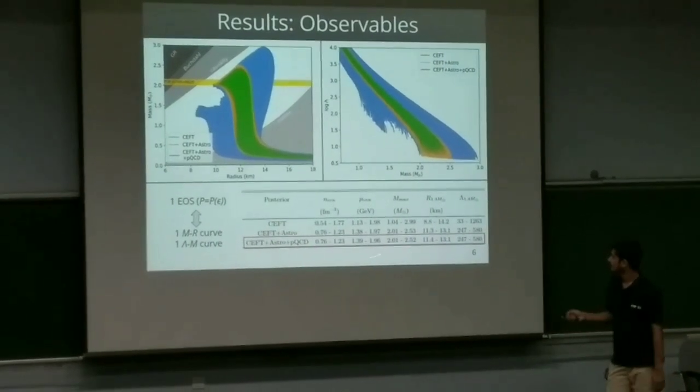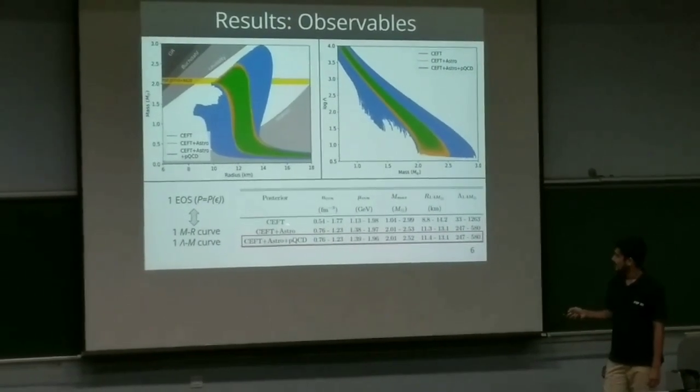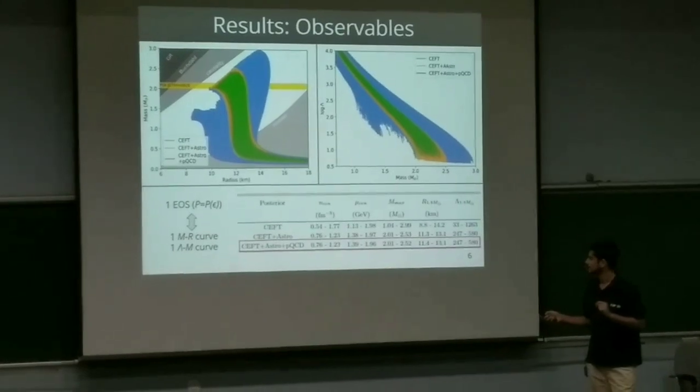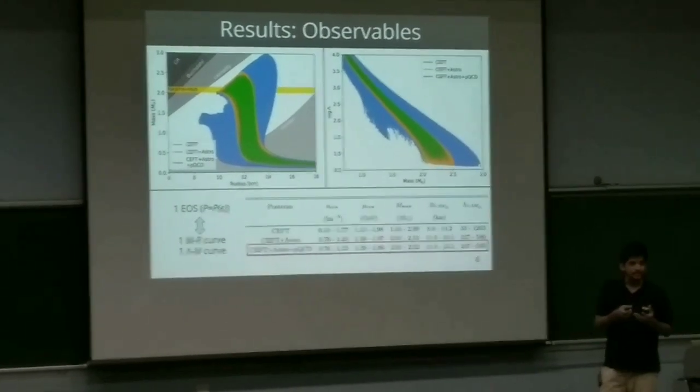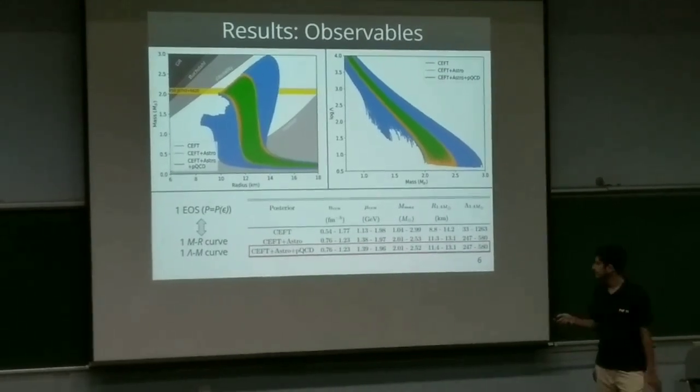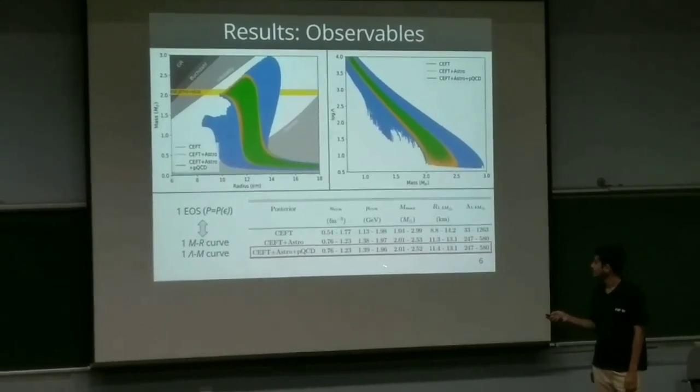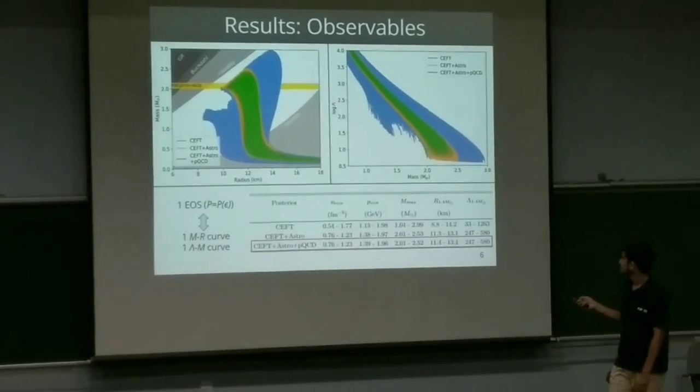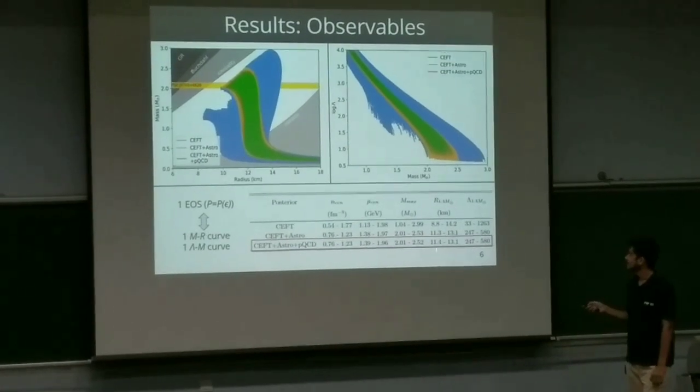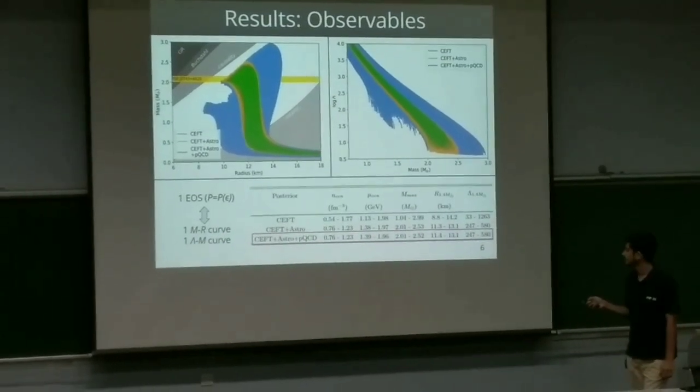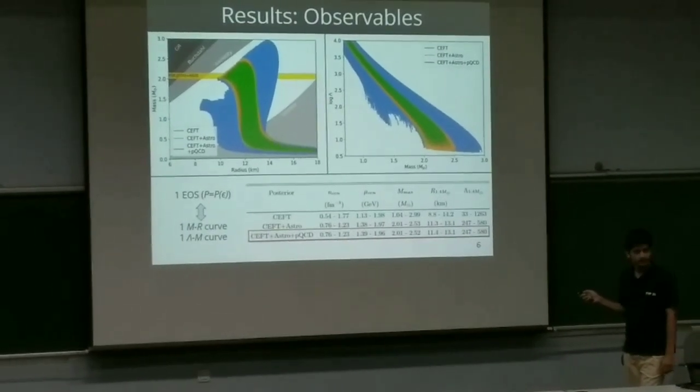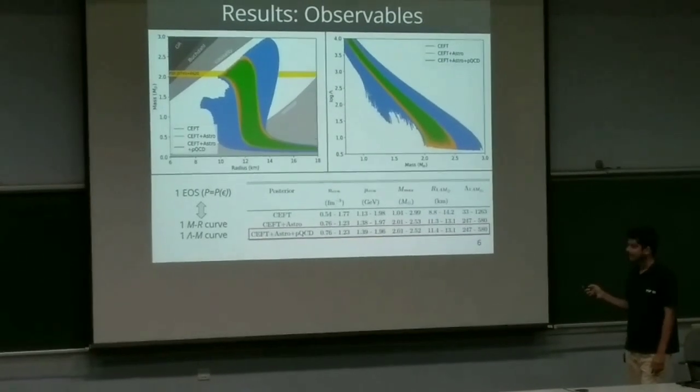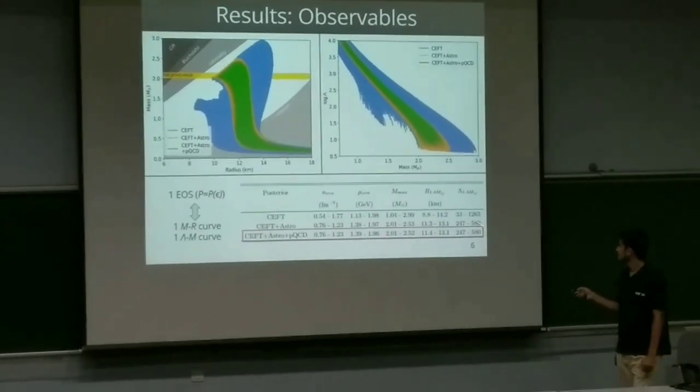We check some physical quantities which are written here. After applying each filter, I have marked the final one where we apply each filter, we see what is the result. And it turns out to be about 1.23 per fermi cubed. Nuclear saturation density of nucleus is around 0.15. So this goes about 8 times of that. And the corresponding chemical potential goes up to 1.96 GeV. Similarly, the maximum mass that we find that satisfies this constraint goes to 2.52 solar mass. The radius of 1.4 solar mass stars comes out to be around 9.4 to 13.1 kilometer. And we find that the tidal deformability of 1.4 solar mass stays above 240.